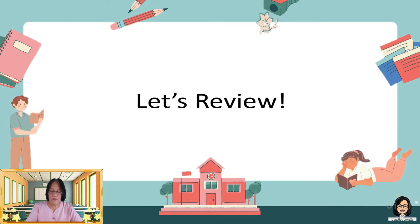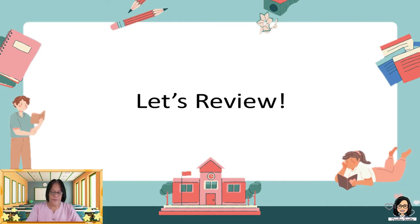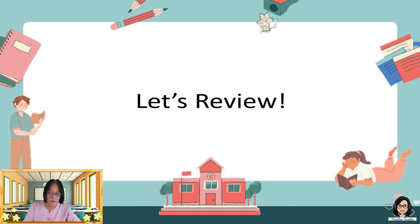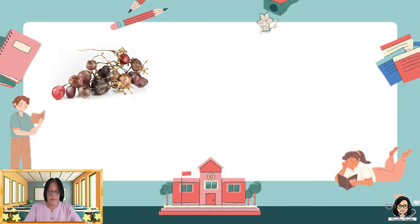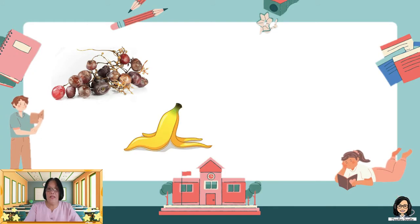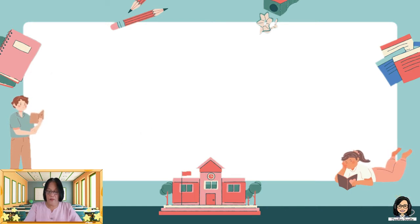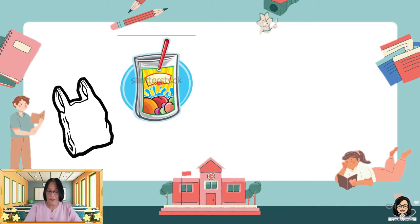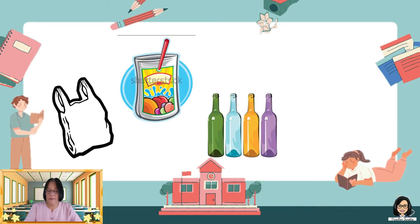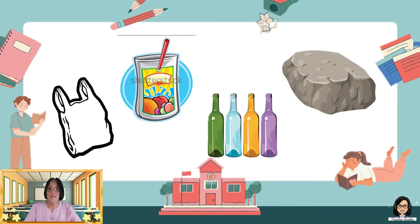But before we proceed to our lesson, let us review what we have taken in our previous lesson. What do you remember about the lesson? Can you classify now the materials that undergo decay? Let's take a look at the materials below: rotten grapes, banana filling, kangkong stem, leftover food, plastic bag, tetra-pack juice, glass bottle, and pieces of wrap.